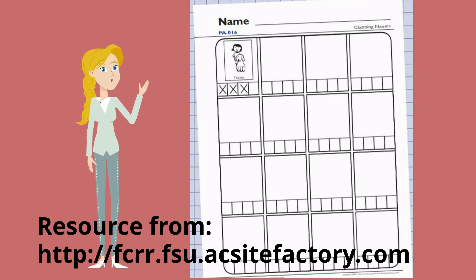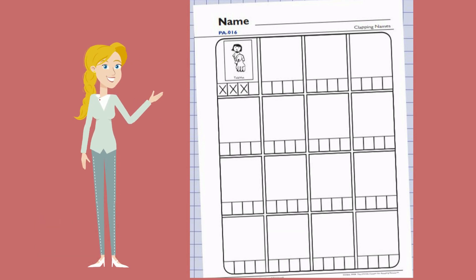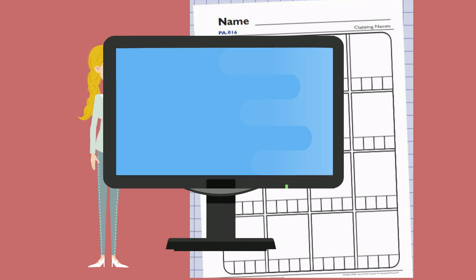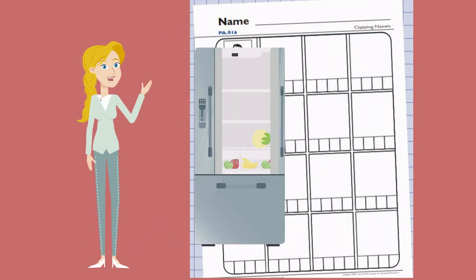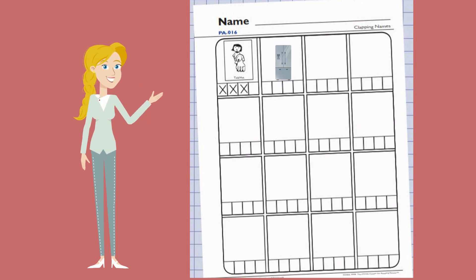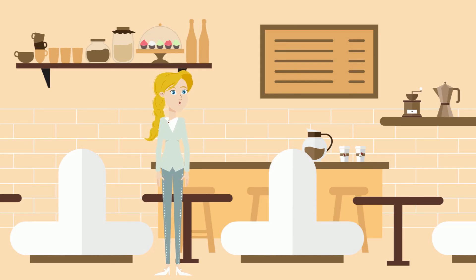Now it's time for you to practice counting syllables in words. In your activities link under this lesson you will find a link to this page. You need to choose different things to count syllables for — whether they be names of people in your family or things around the house, such as a television, carpet, or a fridge. In each space you may draw the object or person, and then once you have clapped the syllables in each word, put crosses or X's in the spaces underneath to show how many syllables are in each word. Have fun counting syllables and I will see you in the next lesson.